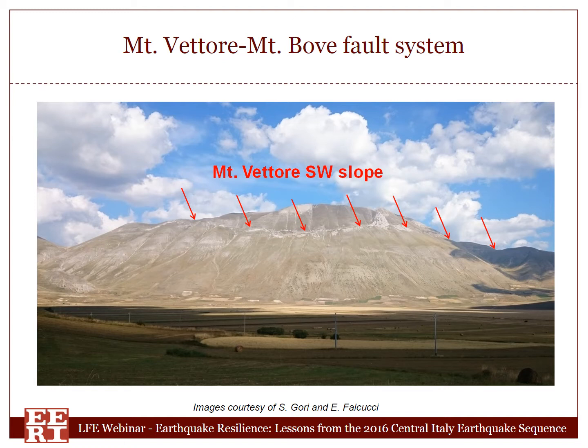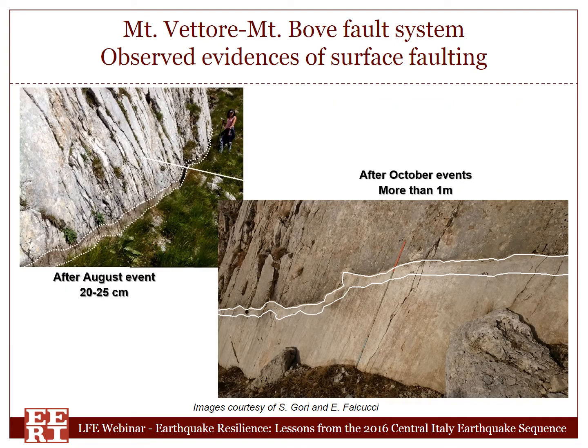This is the seismogenic structure responsible for the earthquake sequence — the Mount Vettore–Montevedbo fault system. The red arrows are pointing at evidences of past surface faulting from these faults. This is a very interesting area where many earthquakes occurred in the last centuries. These are two pictures showing evidences of surface faulting during the 2016 earthquake sequence. After the August event, there was surface faulting of around 25 cm. After the October events, the same spot showed more than one meter of surface faulting, which is remarkable. The GEAR reconnaissance team mapped the whole surface faulting all along the Mount Vettore fault.